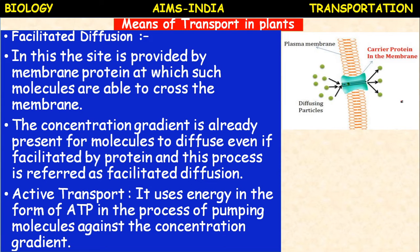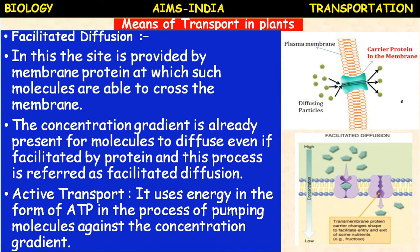Facilitated diffusion also takes place passively. Now active transport: diffusion and facilitated diffusion are both passive transport. Active transport uses energy in the form of ATP in the process of pumping molecules against the concentration gradient.